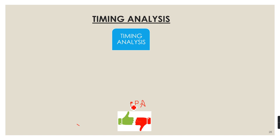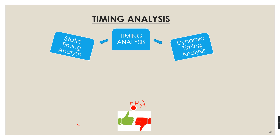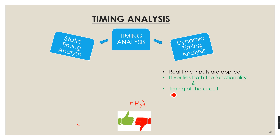We have two types of timing analysis. The first one is static timing analysis and the second one is dynamic timing analysis. In dynamic timing analysis, we apply real-time input test vectors to the input signals of the design and verify the output. If we get the expected output at the expected time, it means the design meets both the logic functionality and timing of the circuit.